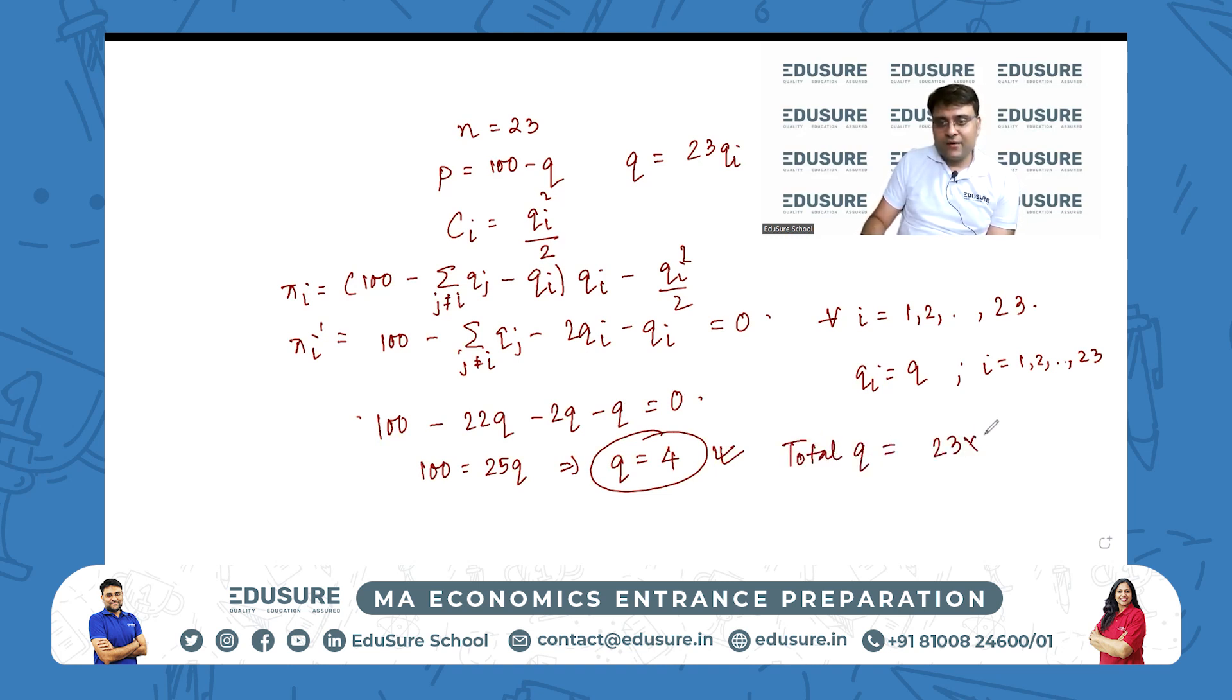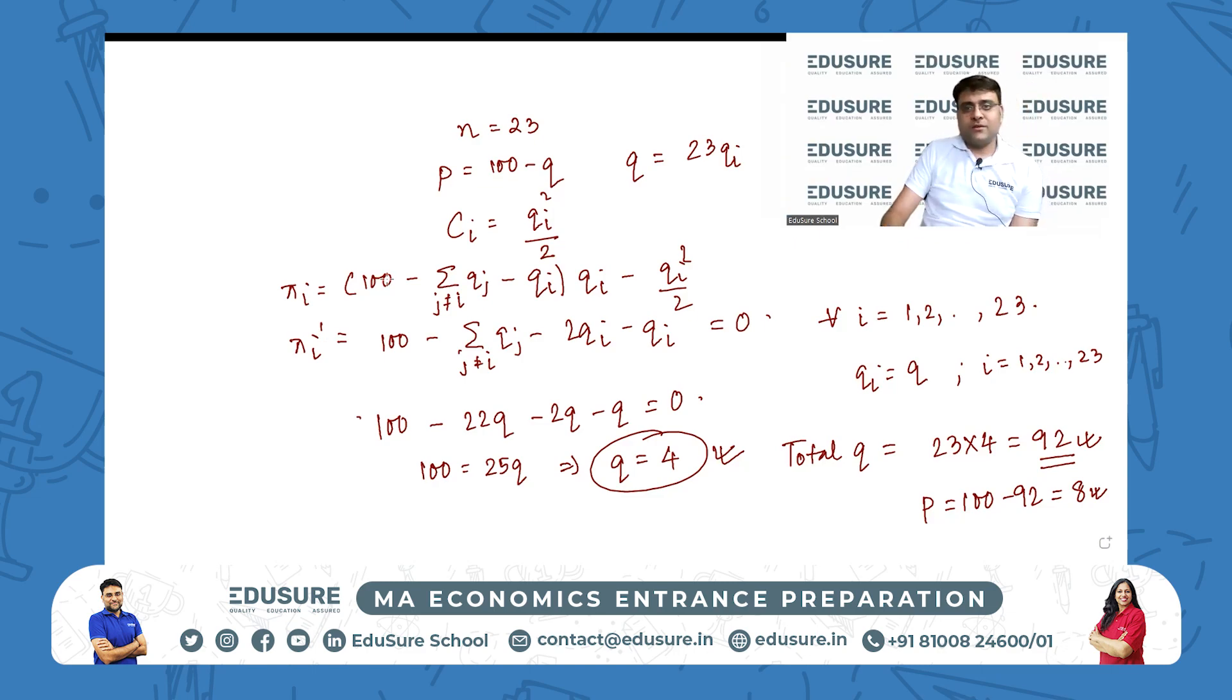The total quantity in the industry is 23 firms multiplied by each firm producing 4, total is 92. Price is 100 - 92 = 8. Only this 4 has been asked, but the other things are also important for you to know how to find them. The answer here is C.